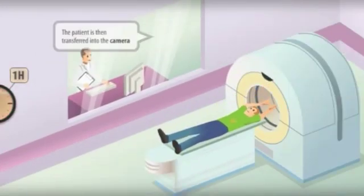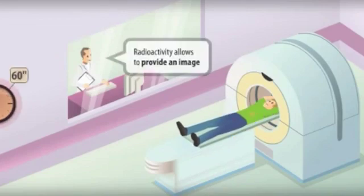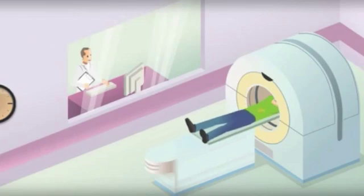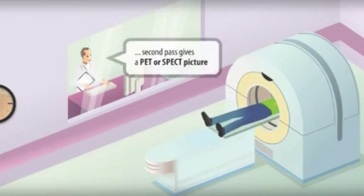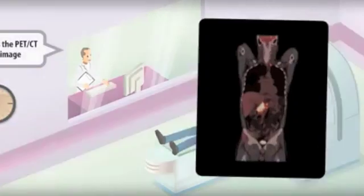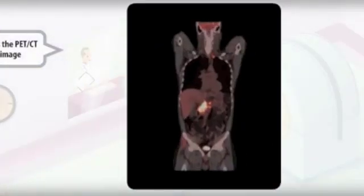The patient is then transferred into the camera. Radioactivity allows to provide an image. First pass gives an x-ray picture, and second pass gives a PET or SPECT picture. Fusion gives the PET CT or SPECT CT image.